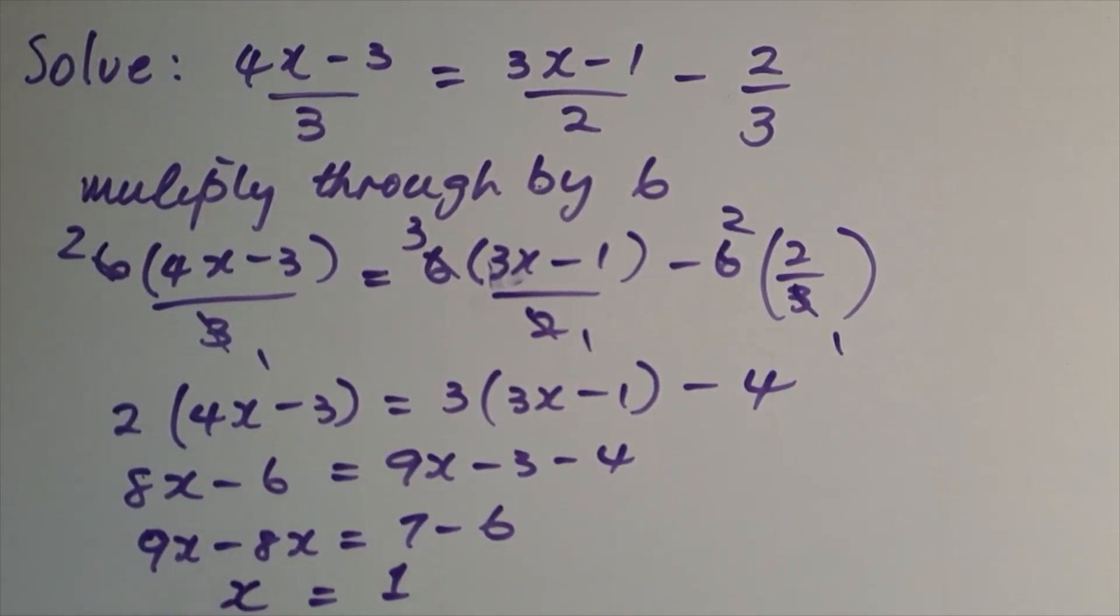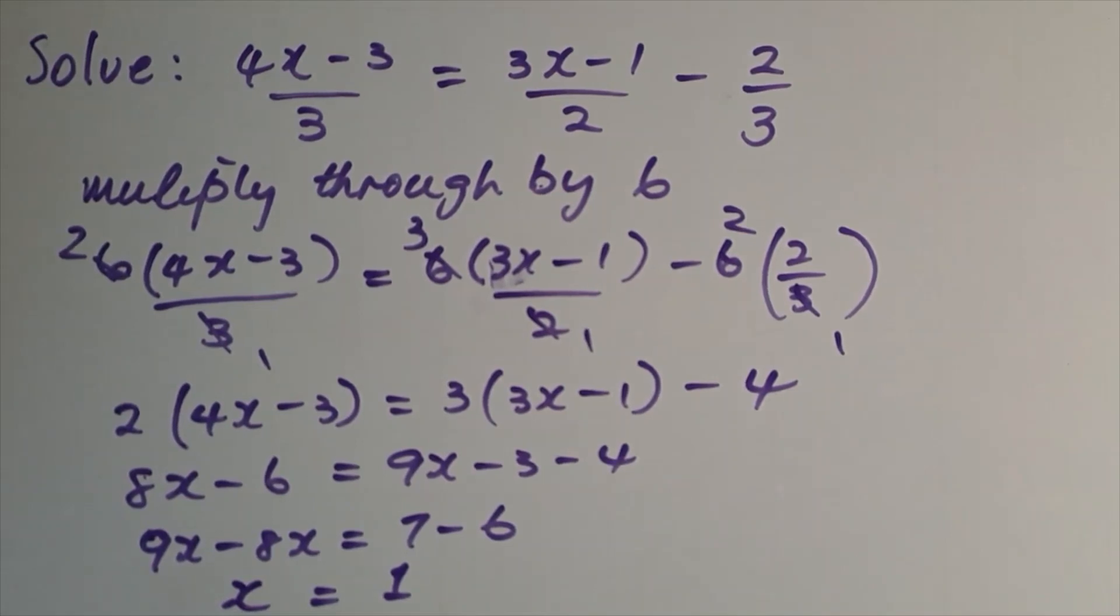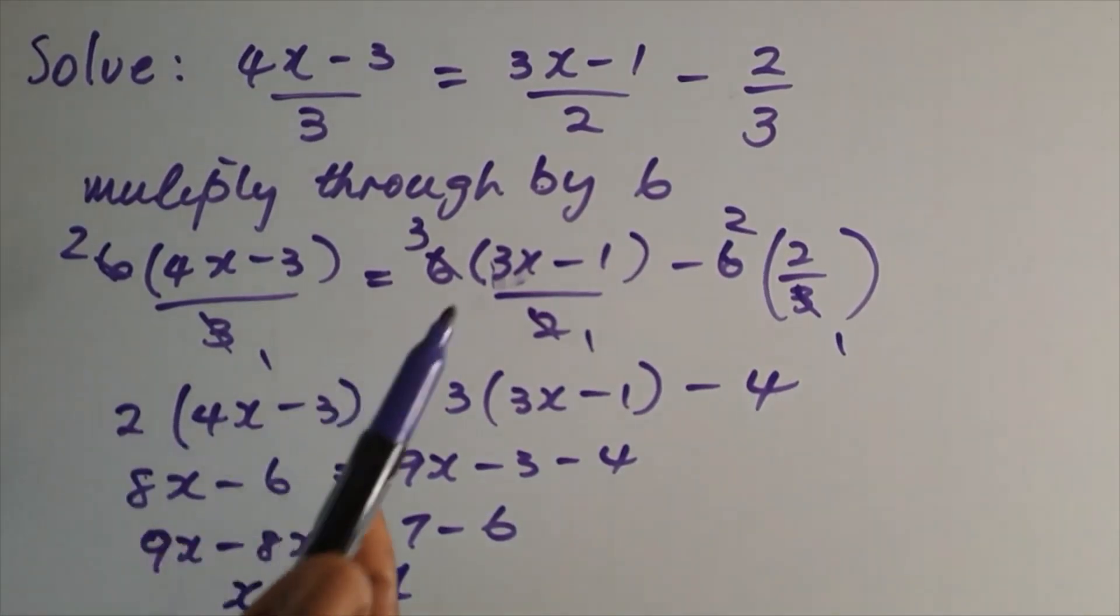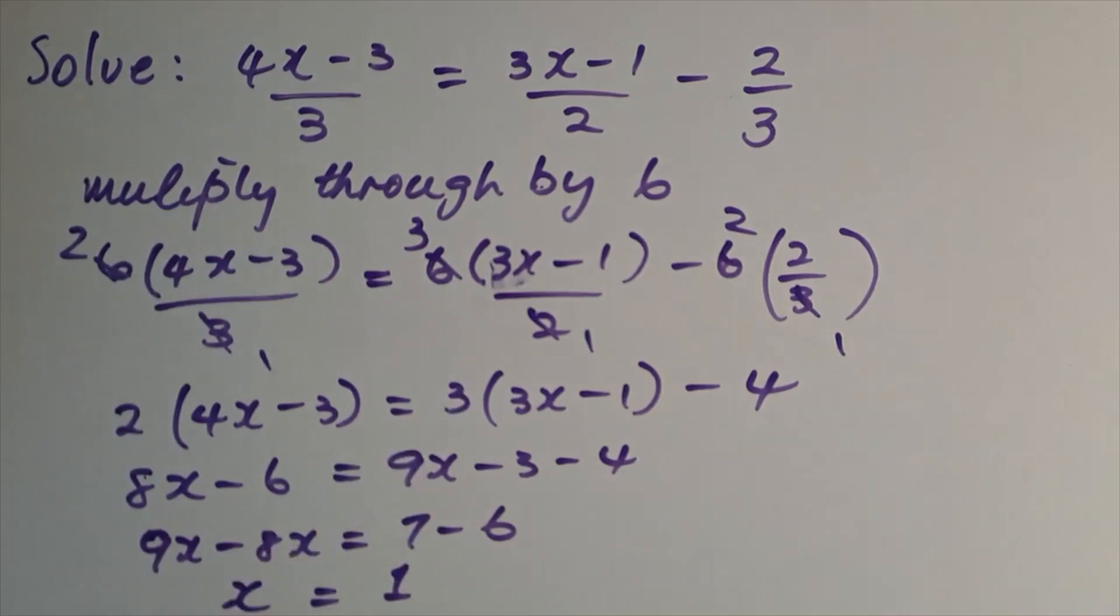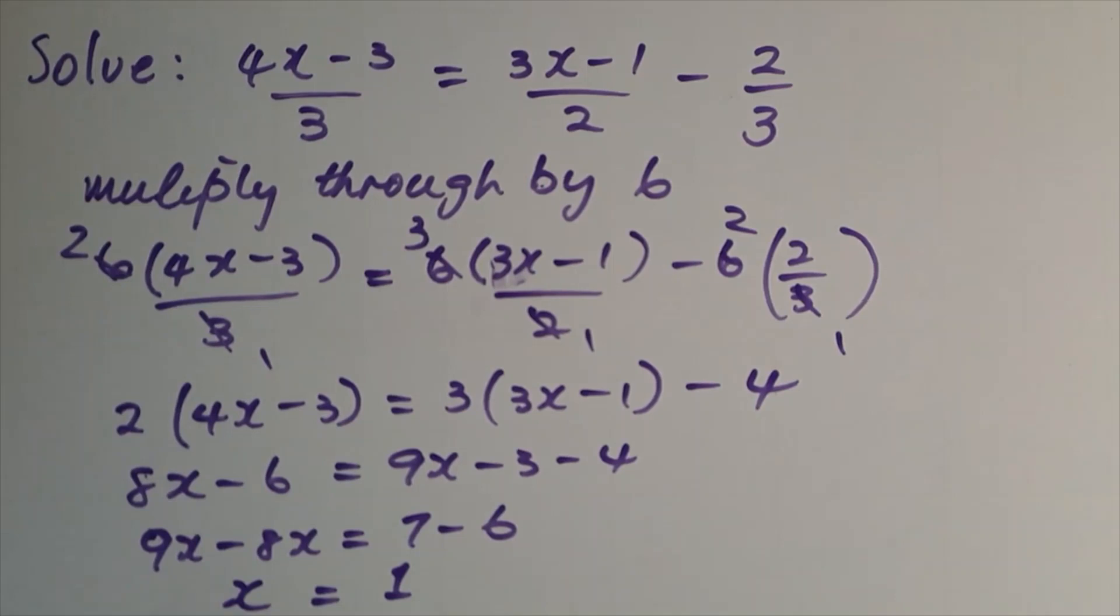The technique we have used is to clear the denominators by multiplying by the lowest common multiple of 3 and 2. By multiplying by 6, we cancelled all the denominators, and all we have to do at this stage is clear the brackets, simplify, rearrange, and our solution is x = 1.